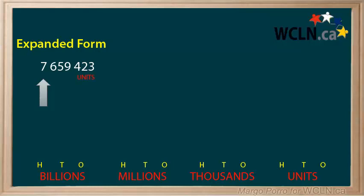The first period is the units period. The next period is the thousands period. The 7 is in the millions period. Since it's the smallest place in the millions period, it's in the one millions place. To expand the 7 we need to write 7 million.